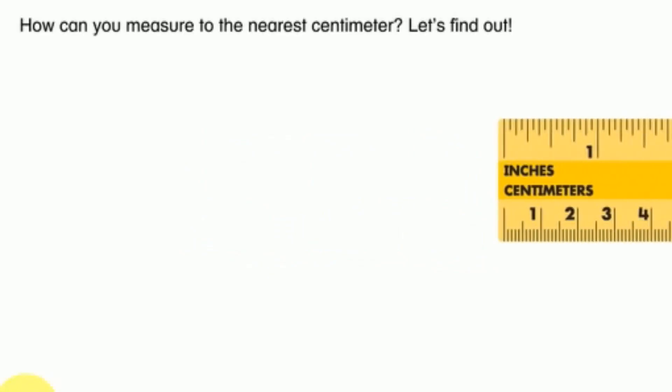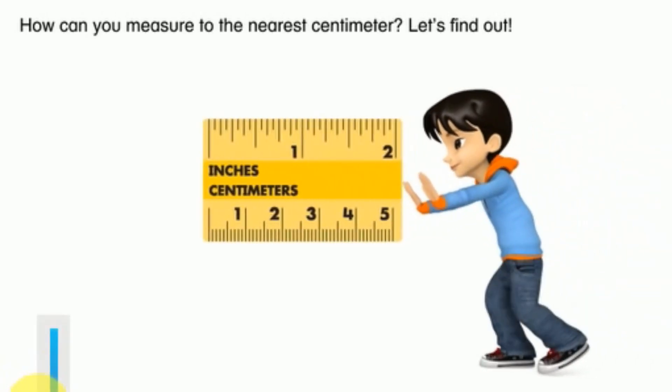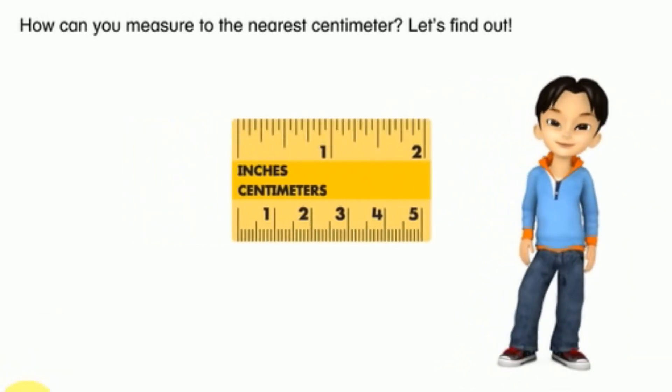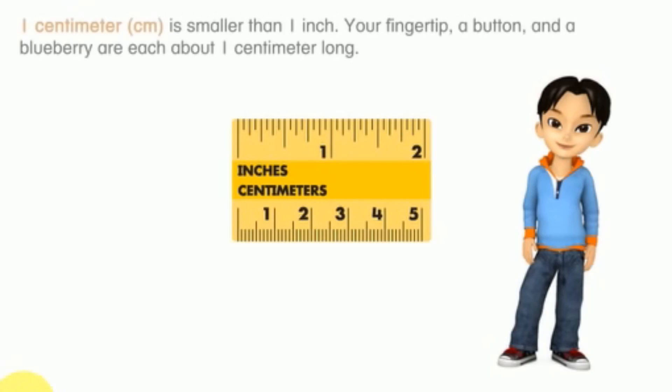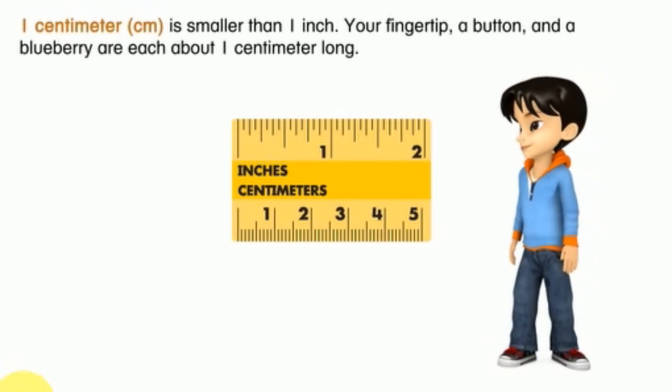How can you measure to the nearest centimeter? Let's find out. One centimeter is smaller than one inch. Your fingertip, a button, and a blueberry are each about one centimeter long.